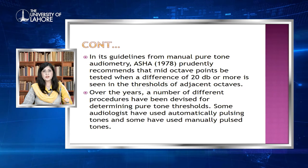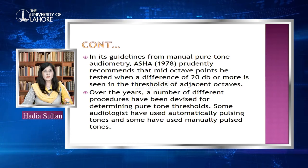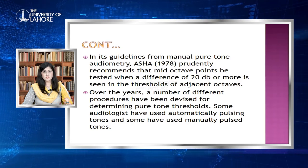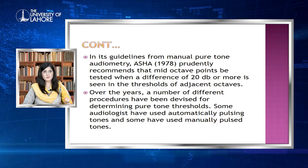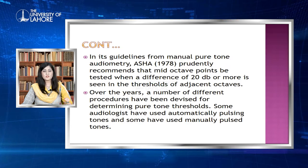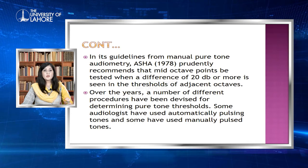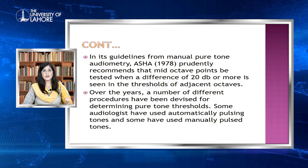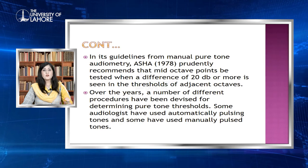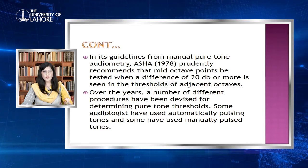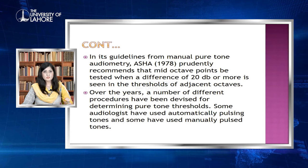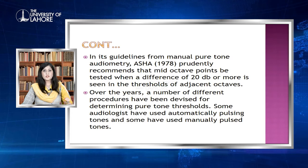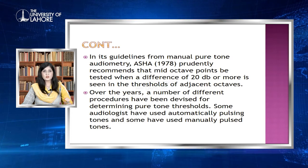According to the guidelines of ASHA — the American Speech-Language Hearing Association — mid-octave points should be tested when a difference of 20 decibels or more is seen in the thresholds of adjacent octaves. For example, if the patient is listening at 40 dB at 1000 Hz and 65–70 dB at 2000 Hz, then you must check the mid-octave frequency of 1500 Hz.